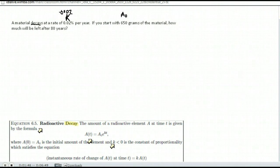Okay, how much will be left after 80 years? So that's our amount of time, T. And we're trying to find A of T. So we have A of T is going to be equal to A naught. A with a little zero is called A naught. 650. E to the K is negative 0.0002 times the amount of time, which is 80.